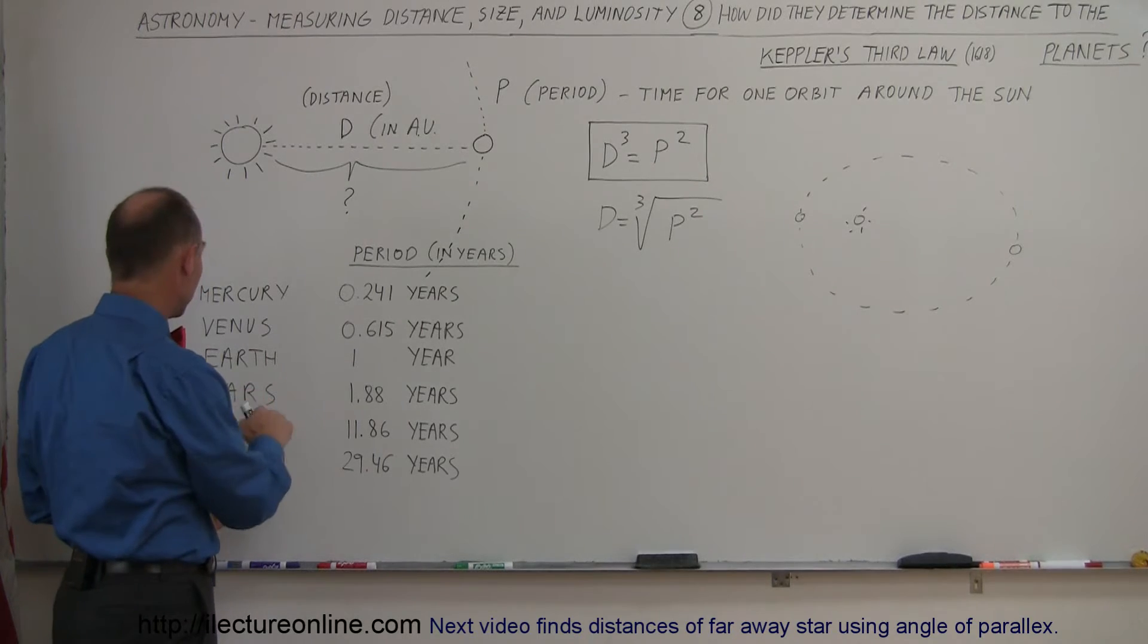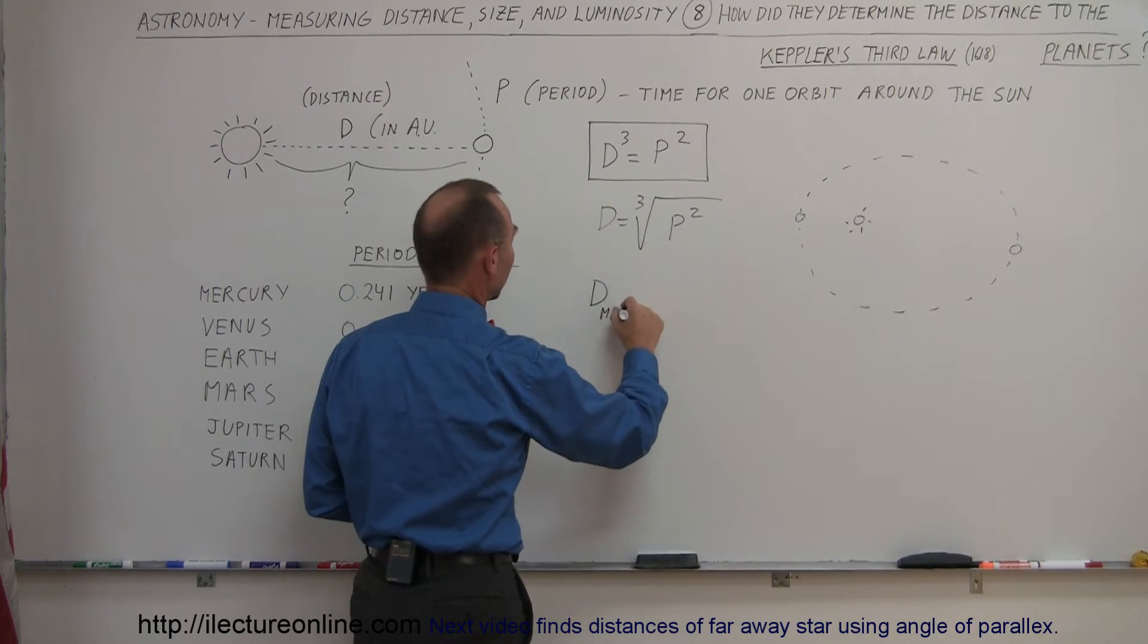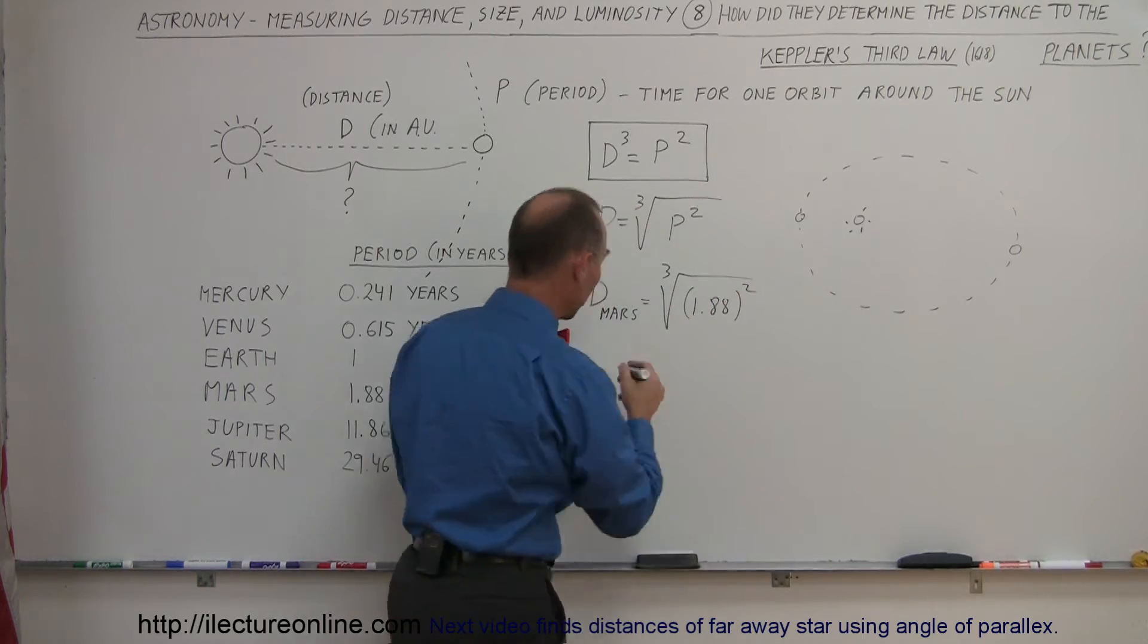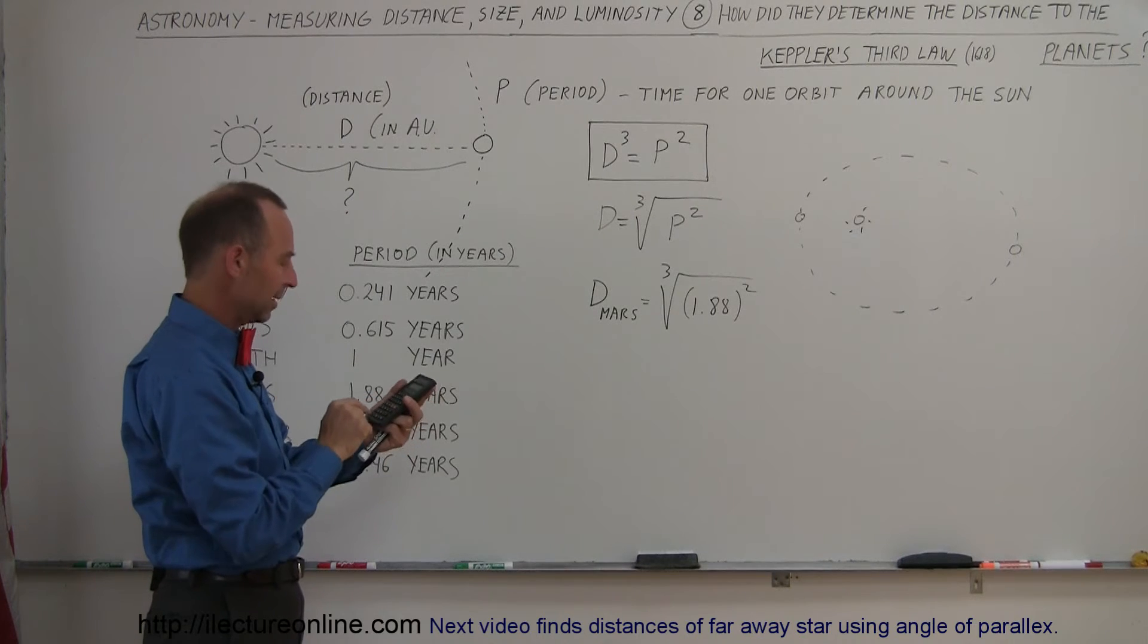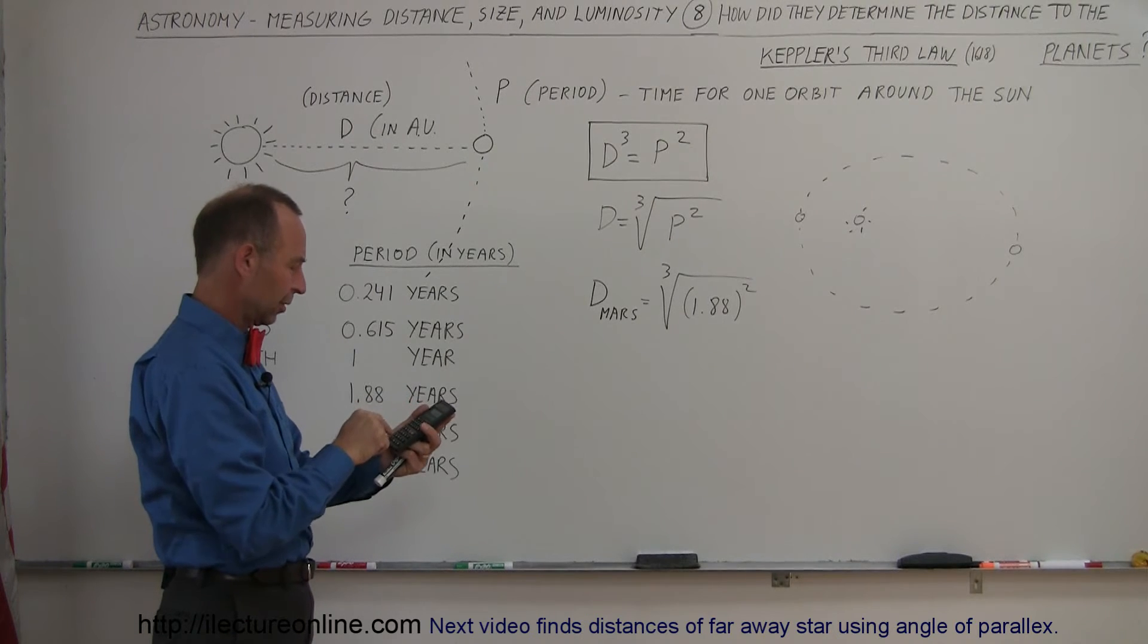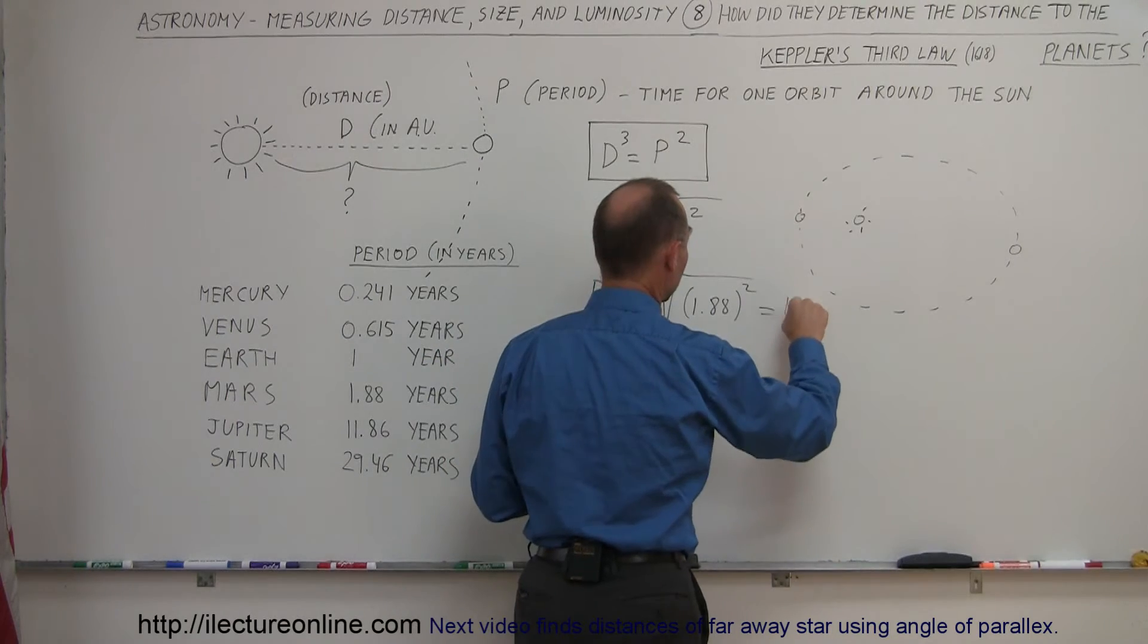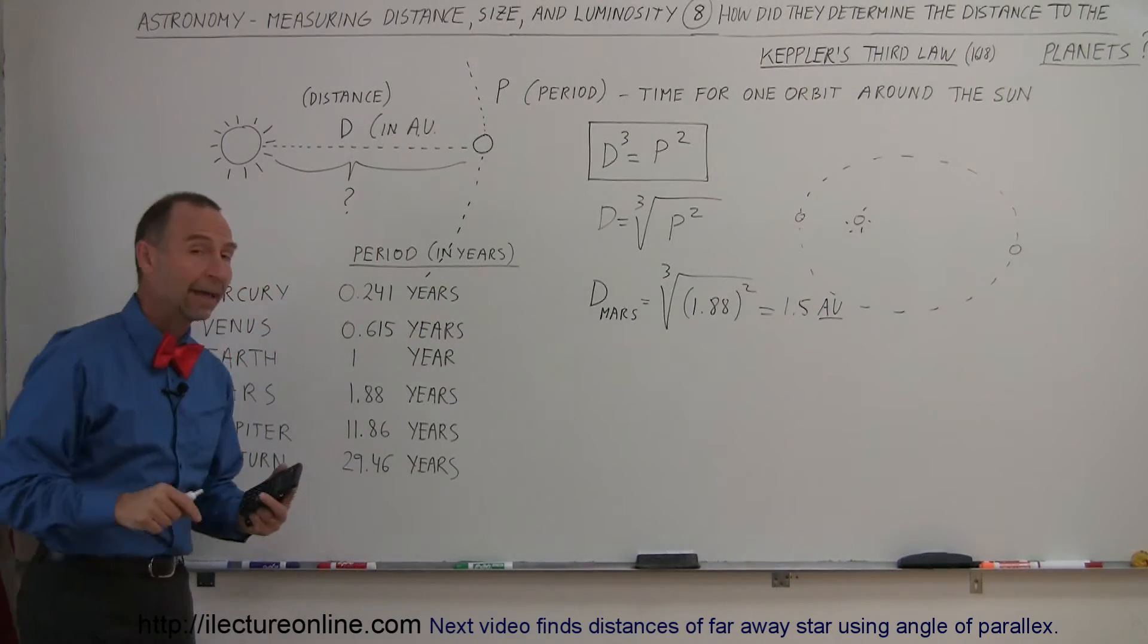For example, if you want to know the distance to Mars, we plug in this number right here. So we say that the distance to Mars is equal to the cube root of the period, which they measured to be 1.88 in years squared, and that would be the distance in astronomical units. So what we do then is we grab our calculator, 1.88, we square that number, and then we take the cube root of that. And there it is, 1.5 astronomical units. So that meant they now knew that Mars was one and a half times as far away from the sun as the earth.